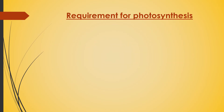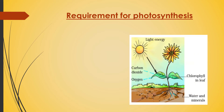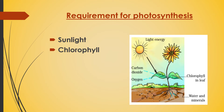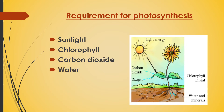Requirements for photosynthesis, or what is needed for photosynthesis: number 1, sunlight from the sun; number 2, chlorophyll present in the leaves; number 3, carbon dioxide from the atmosphere; number 4, water from the soil. Let us discuss in detail.